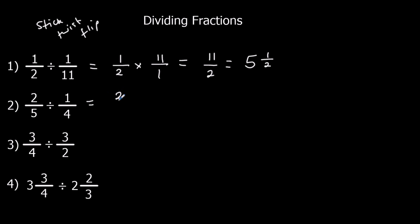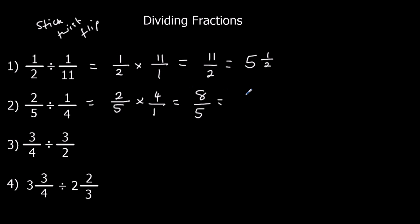Same again. 2 fifths divided by 4 — that's the same as 2 fifths times 4 over 1. 2 times 4 is 8, and 5 times 1 is 5. I could change it to a mixed number — that's the same as 1 whole one and 3 fifths.